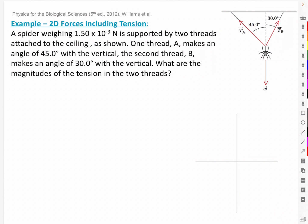Here's an example of 2D forces including tension. A spider weighing 1.5 times 10 to the negative 3 newtons is supported by two threads attached to the ceiling as shown.